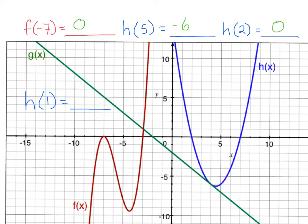Last one — what is h of 1? When x is 1, y is 1, 2, 3, 4, 5 — a little higher than 5, like 5 and a half. When x is 1, the graph is up at about 5 and a half. I can't put an equals sign because I don't know for sure, so I need the little squiggly equal sign, which means approximately. So h of 1 is approximately 5.5. This is called evaluating functions from a graph.